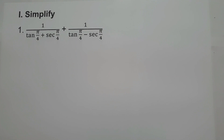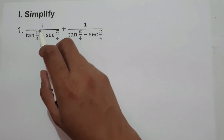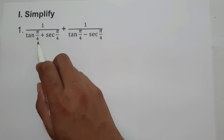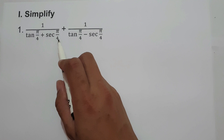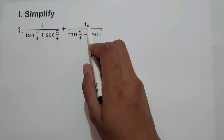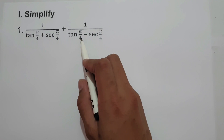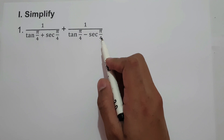For today's video, we are going to answer another trigonometric expression: 1 over tangent(π/4) plus secant(π/4), plus 1 over tangent(π/4) minus secant(π/4).